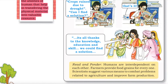When crops ruin due to drought, can we find a solution? It is all thanks to knowledge, education and skill that we could find a solution. Humans are interdependent on each other. Farmers provide food grains for everyone. Scientists suggest various means to combat problems related to agriculture and improve farm production.